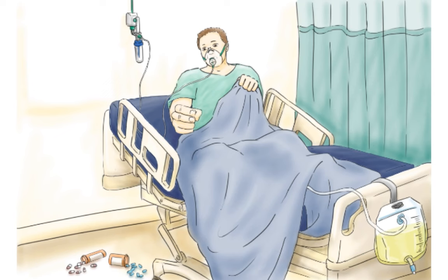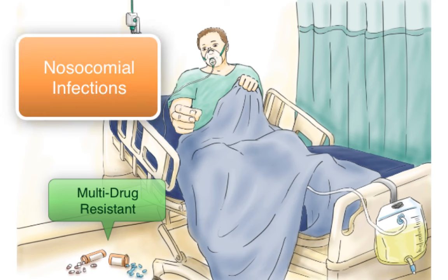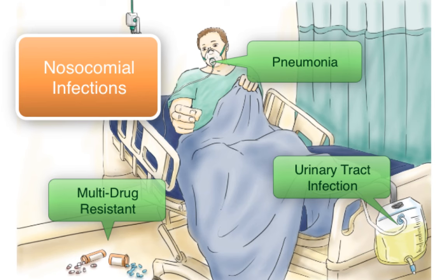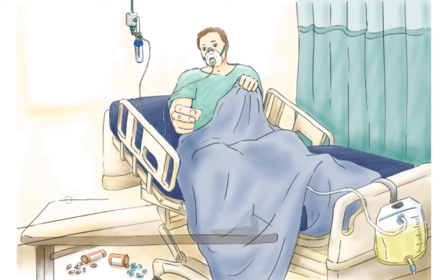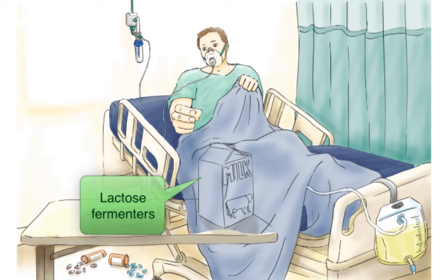So far we have that they're all multidrug resistant, all nosocomial infections, and they most often cause pneumonia and UTIs. There's really only one more important shared feature: they all ferment lactose. This characteristic is often one of the first mentioned in questions to help differentiate between the various Enterobacteriaceae. The only other important lactose fermenter you'll have to remember is E. coli, which we'll cover in another video. To remember this, we're going to draw a milk carton, because milk has lactose.